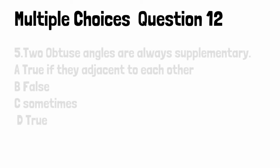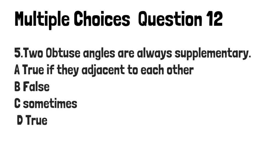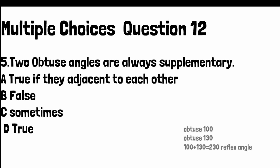The last question is question 5. Two obtuse angles are always supplementary. Option A: True if they are adjacent to each other, Option B: False, Option C: Sometimes, Option D: True. Option B is the right answer. Two obtuse angles are not supplementary.